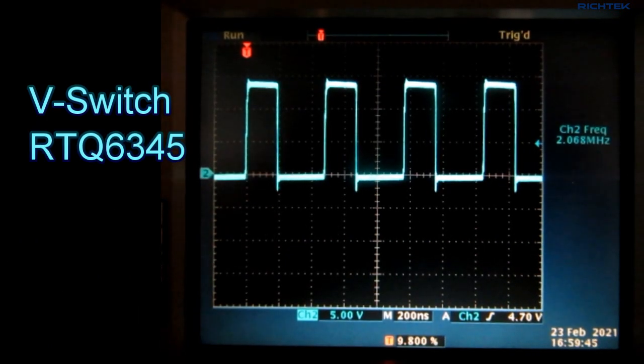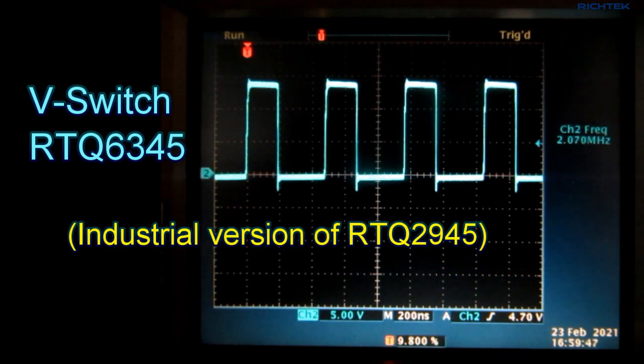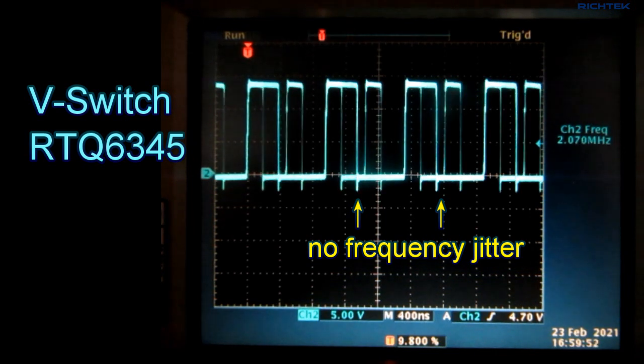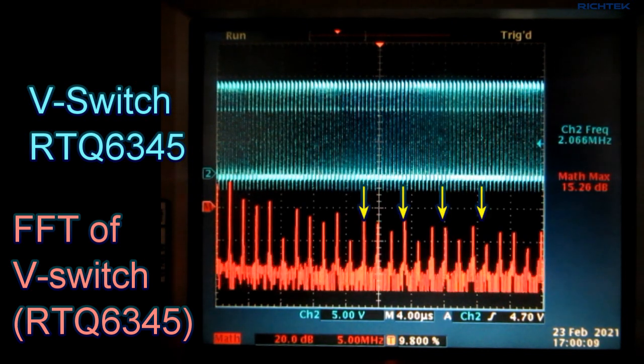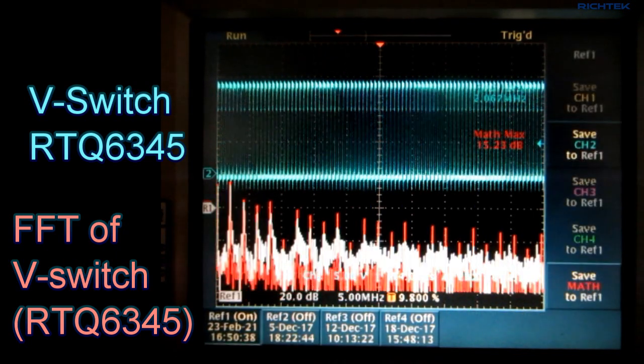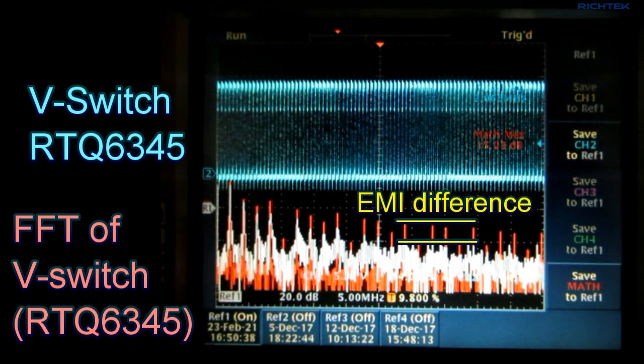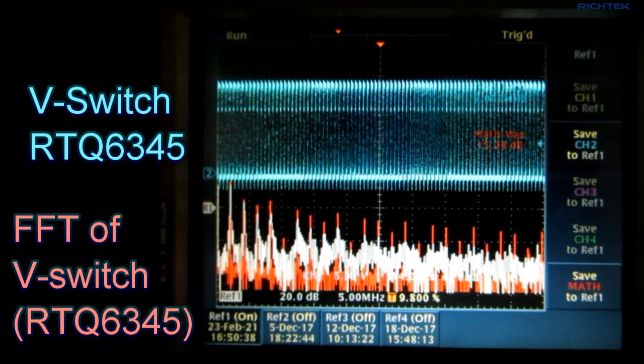Now, I will do the same measurement with the RTQ6345, which is the industrial version of the RTQ2945, in the same configuration. As you can see, the RTQ6345 does not have spread spectrum frequency jitter. The FFT of the switching waveform shows the higher harmonics very clearly. The peak levels are several dB higher compared to the previously stored spread spectrum FFT. So the RTQ2945 frequency jitter function also helps to reduce high frequency EMI.